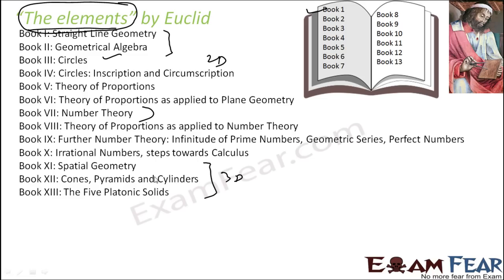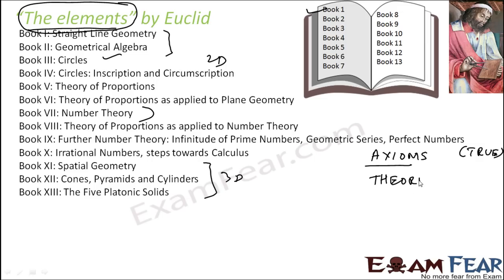In this book, Euclid has assumed certain axioms and treated them as true. Based on those axioms, he then deduced theorems, and using those theorems he can prove a lot of things.